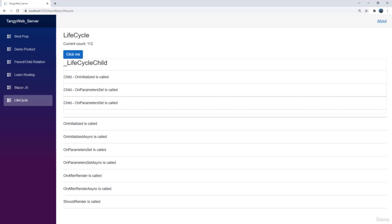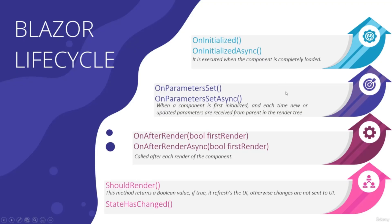Another use case for ShouldRender: if you return false, the UI will not re-render — which can be handy in certain situations. We won't use this method often, but it's good to know it's available. The last lifecycle method is StateHasChanged, called after all lifecycle methods have been executed. It notifies the component that its state has changed and can be invoked manually to trigger a UI re-render — that is a critical point.